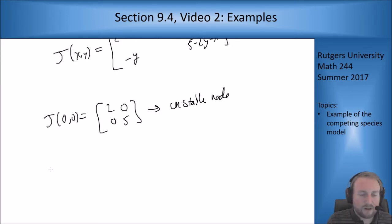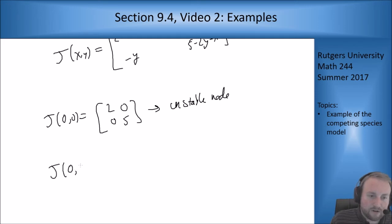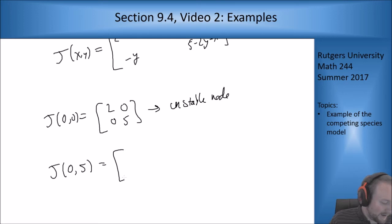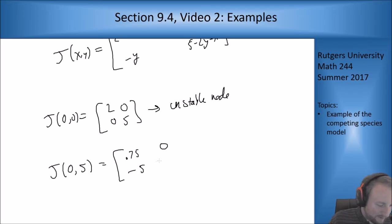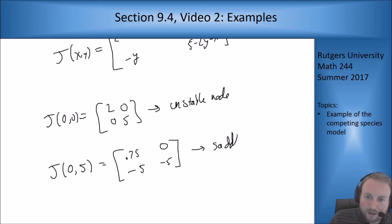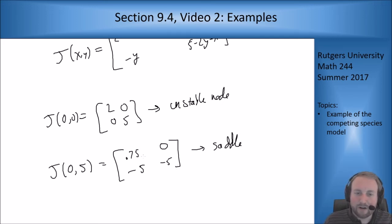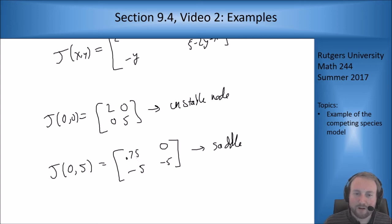If I plug in (0, 5) — the point on the axis — I get the matrix [0.75, 0; negative 5, negative 5]. This is a saddle point, because the eigenvalues are the numbers on the diagonal: negative 5 and 0.75, which are opposite in sign. So we get a saddle point there, which is good — we didn't want this to be stable.